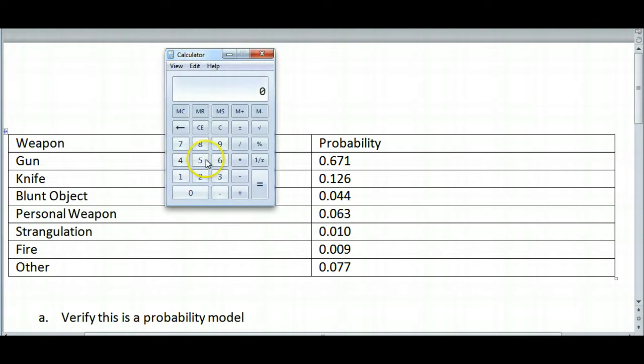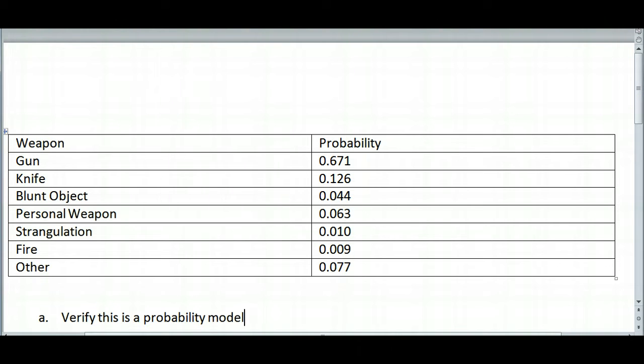So I'm going to take my calculator out, and I'm going to add all of the probabilities together. And I get 1. This is good. That's the first condition of a probability model. The sum of all of the probabilities must sum to 1.